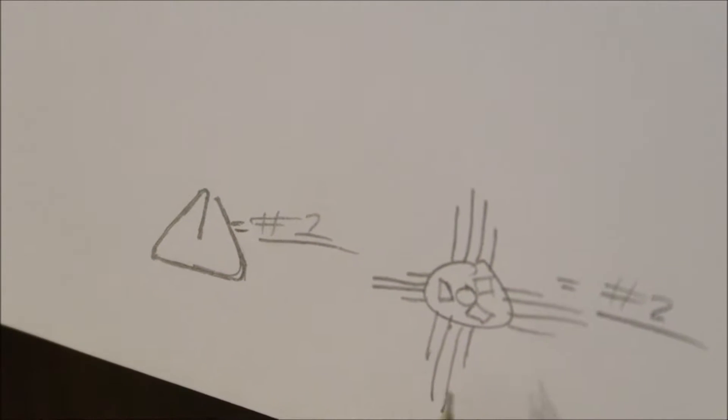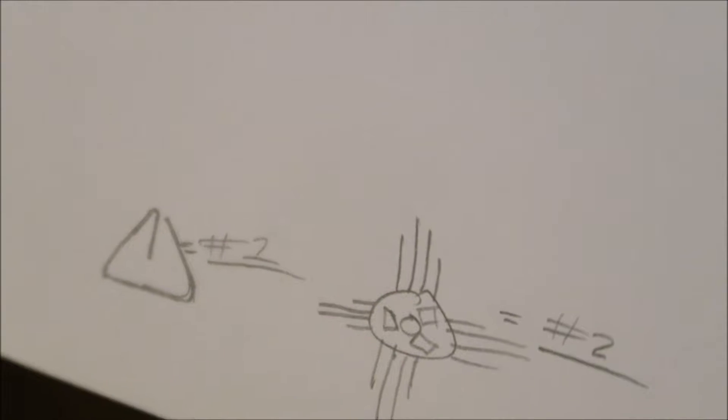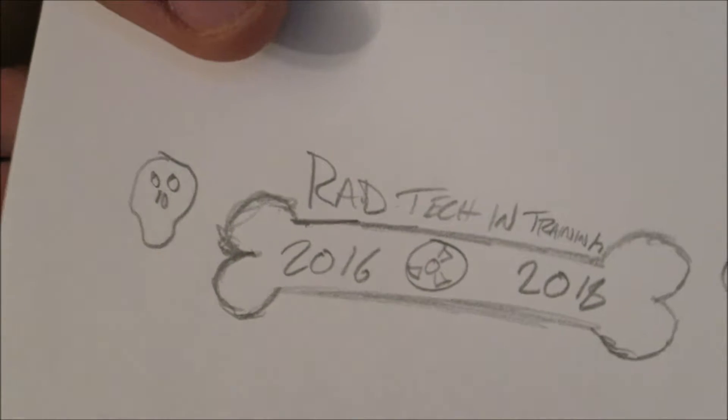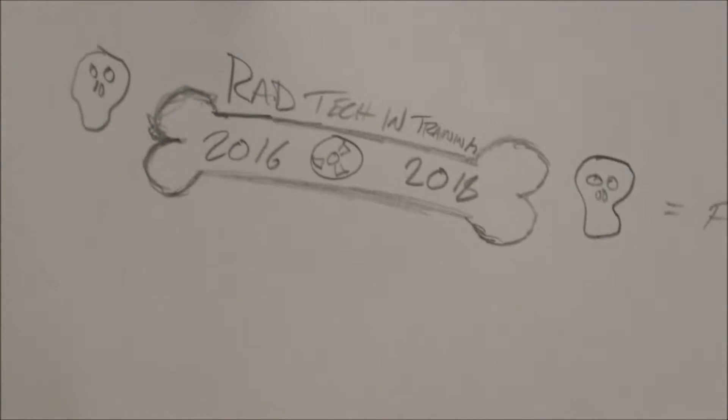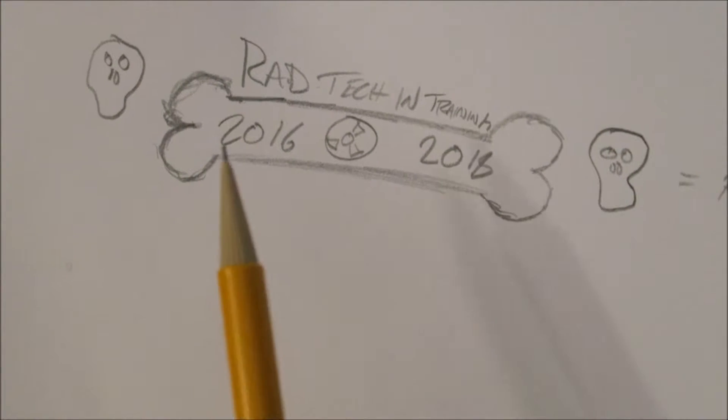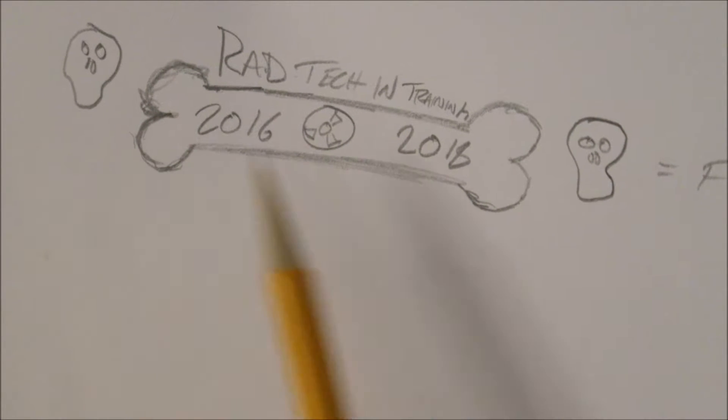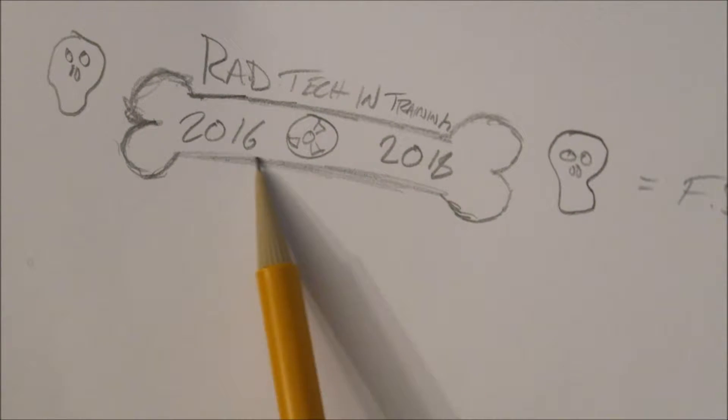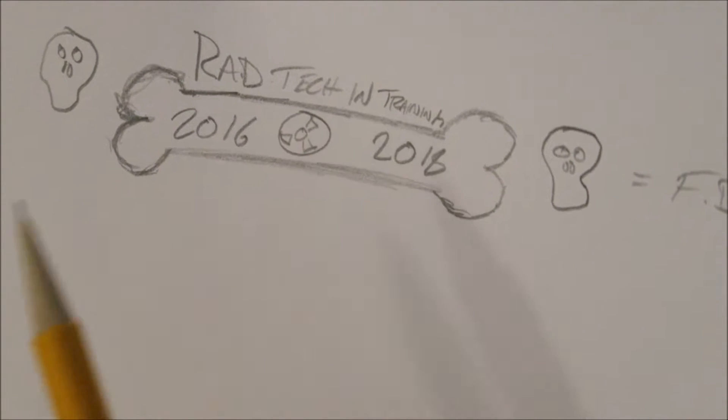And then number two, we have the New Mexico Z symbol with the radiation symbol through the middle, because that's basically what my life is about now, is causing radiation. And then this one is from my personal Facebook page. It is a bone and then it says rad tech in training. There's going to be two skulls and then it's going to say 2016 to 2018 with the rad symbol in the middle.